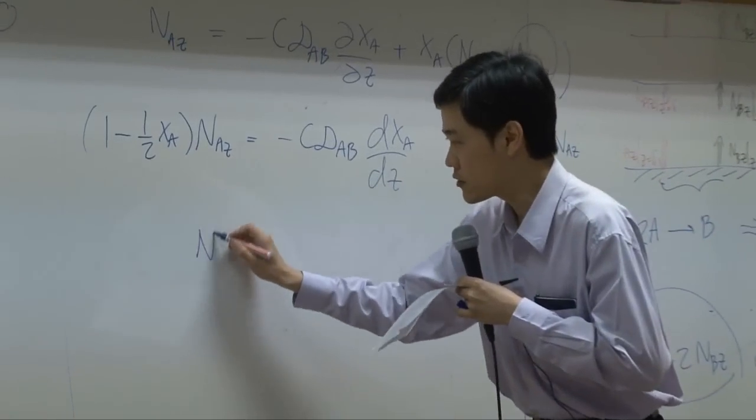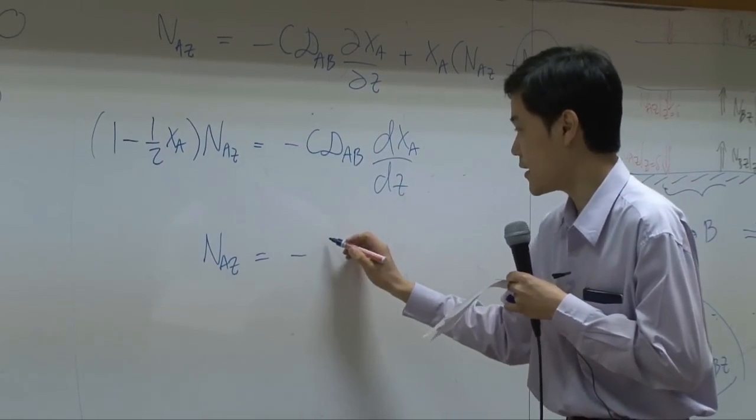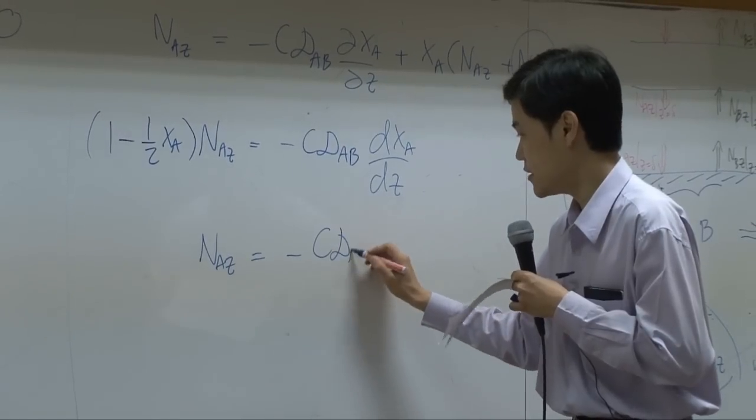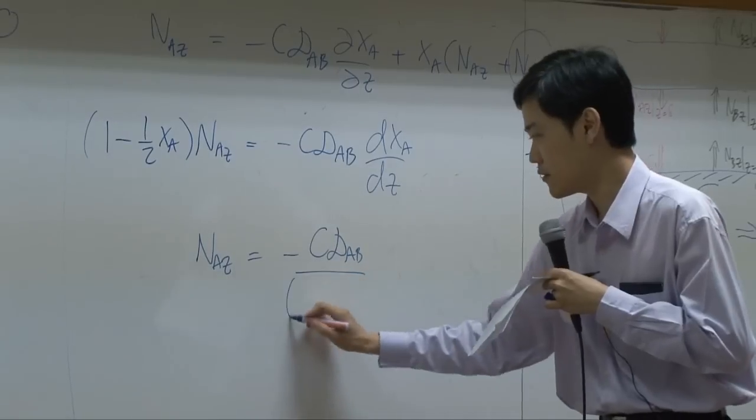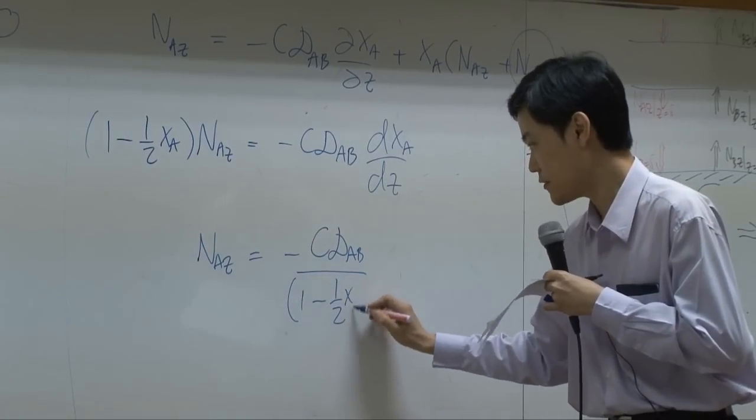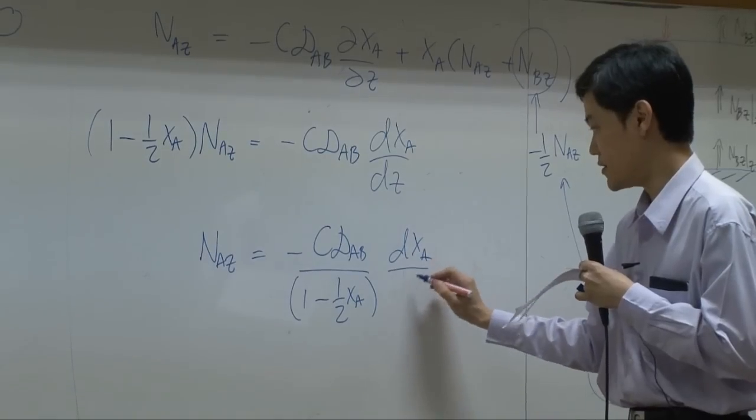N_A_Z equal to minus C D_AB dX_A by dZ. In other words, N_A_Z is equal to minus C D_AB over 1 minus half X_A, dX_A by dZ.